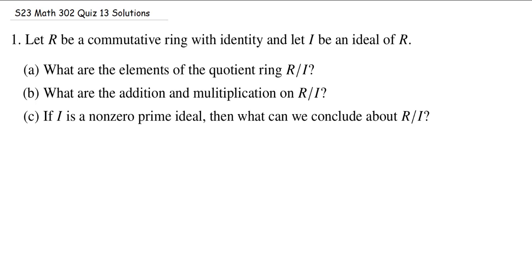We're going to start with a commutative ring with identity. Many of the things we're talking about, you don't need a commutative ring or even an identity for that matter, but it will simplify some things and be consistent with what we did in class. So we have a commutative ring R with identity and an ideal I of R.